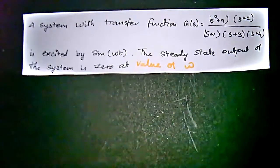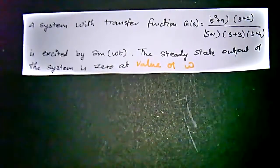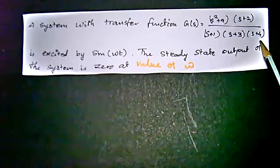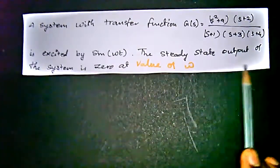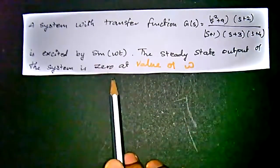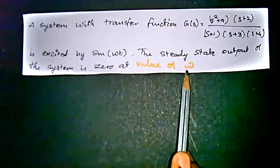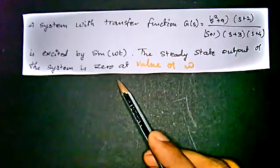We are going to look at a problem in control systems. The problem is: a system with transfer function G(s) equal to (s² + 9)(s + 2) divided by s(s+1)(s+3)(s+4) is excited by sin(ωt). The steady state output of the system is 0 — at what value of omega? We have to find the value of omega such that the steady state output is 0.